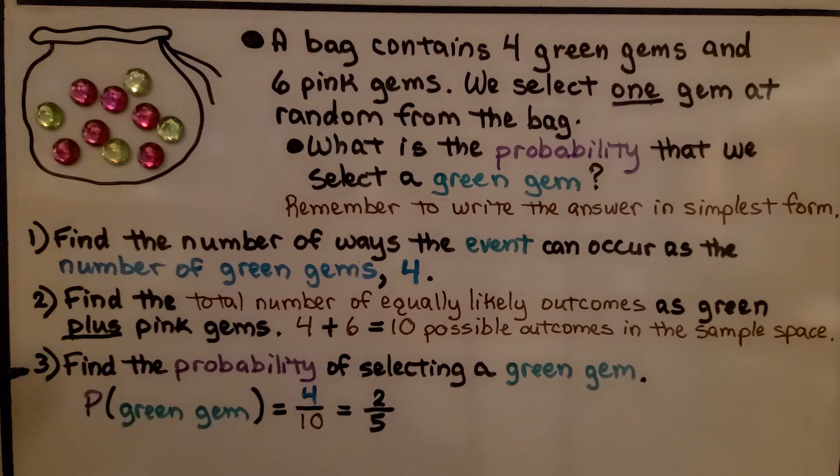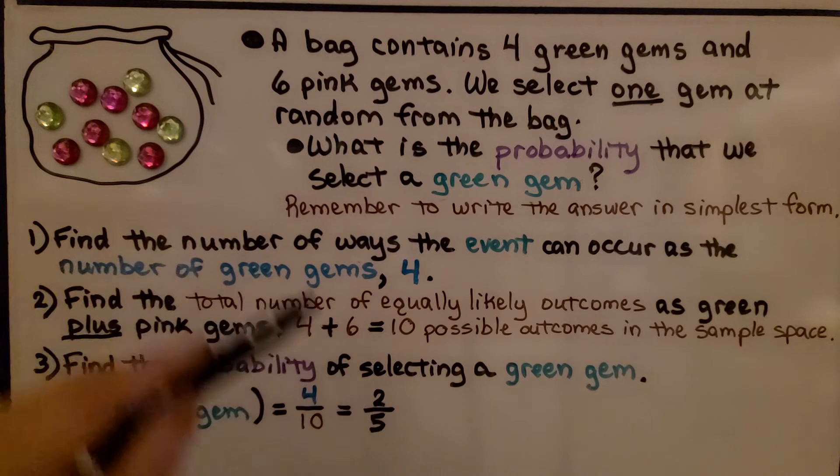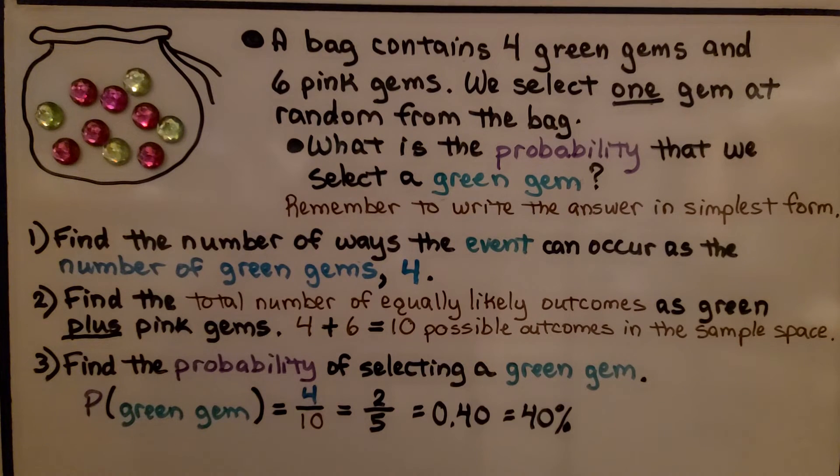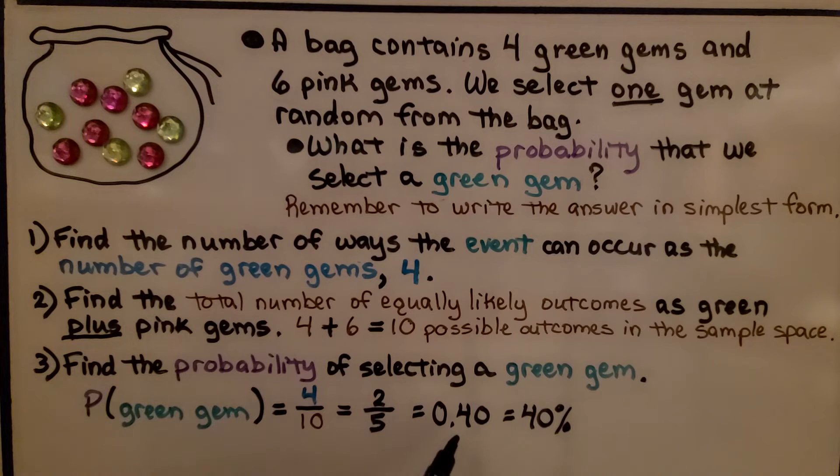And we find the probability of selecting a green gem. The probability of green gem is four out of ten. It's four-tenths. We remember to simplify it. It's two-fifths. We can write it as a decimal as 0.40. We can write it as a percent as forty percent.